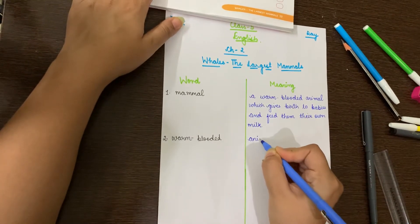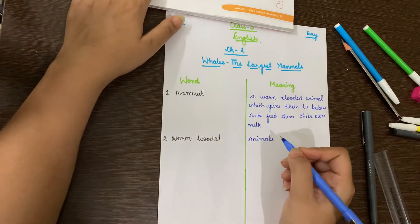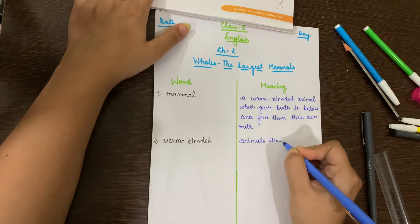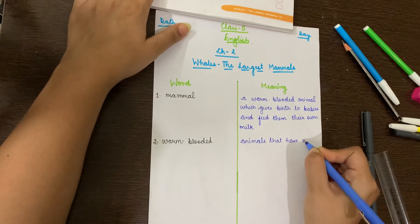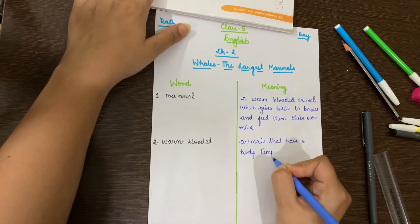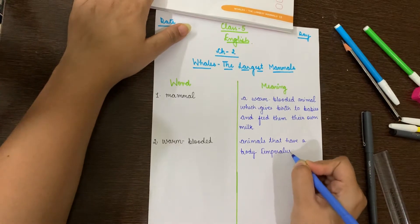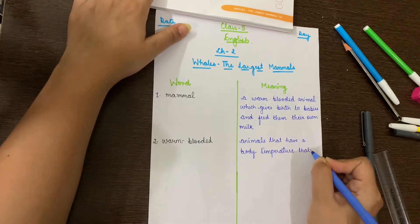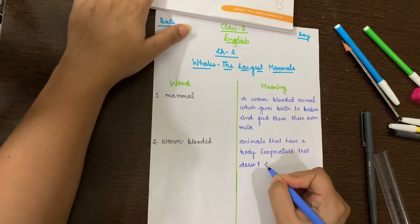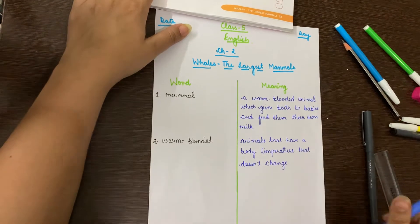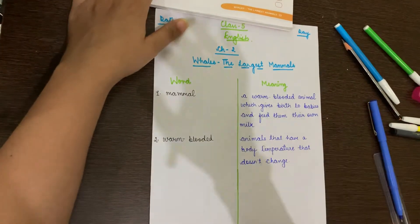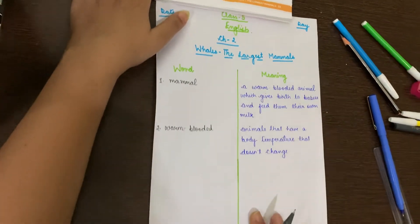We are also warm-blooded, do you know? We are also warm-blooded. Animals that have a body temperature — T-E-M-P-E-R-A-T-U-R-E — that doesn't change are warm-blooded. Our body temperature is the same regardless of outside temperature, that's why we have to change our clothes according to the temperature. So animals whose body temperature does not change are known as warm-blooded.